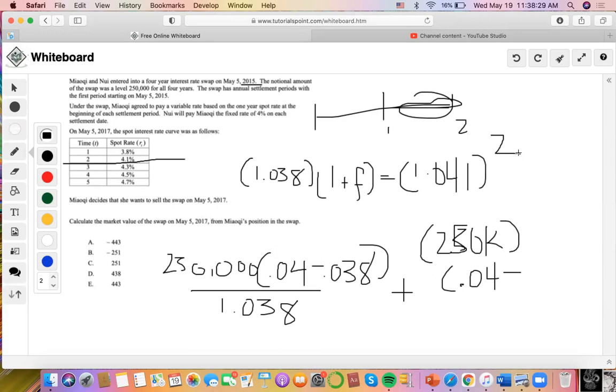Now solving for the forward rate, it's going to be 1.041 squared divided by 1.03 minus one. So we find that the forward rate will be 0.0504.